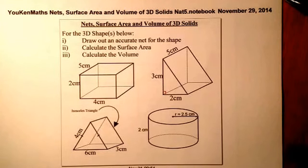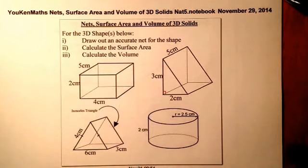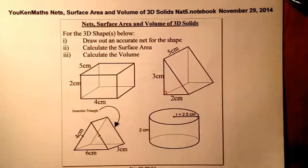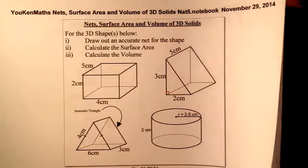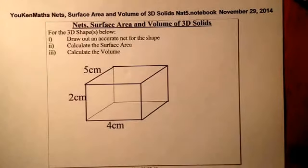The first thing we're going to do is look at the cuboid, and we'll go for the net first of all, then surface area and then the volume of each of the shapes. That's the way we're going to go ahead with these questions.